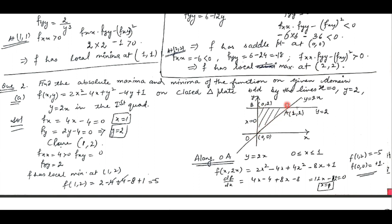The boundary consists of line OA, line AB, and line BO. Along OA, the equation is y = 2x and x varies from 0 to 1. Substituting y = 2x into the given function converts it to a single variable function in x. We find its derivative with respect to x, put it to be 0 to get the interior critical point. The end points are (0, 0) and (1, 2). We find out the values of the function at all these points.